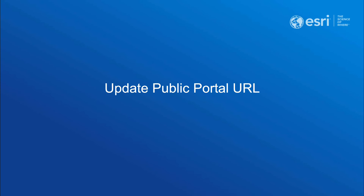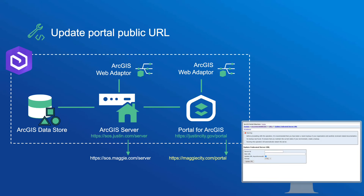Has your organization ever undergone a name change? Maybe you're rebranding or merging with another business? In the past, it has been challenging to update your Enterprise Portal URL to reflect a new name. Now ArcGIS Enterprise 11.4 has introduced a new API to allow administrators to update the public-facing URL for their Enterprise Portal. In ArcGIS 11.4, modifying the domain, subdomain, context, or any combination of these URL components will be supported.